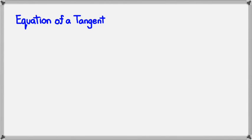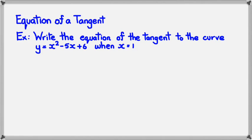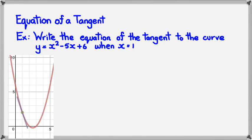So how do we find the equation of a tangent? I guess the best way to do it is through an example. Here's the question: Write the equation of the tangent to the curve y = x² - 5x + 6 when x = 1. As always, I'd recommend to you guys to just draw a quick diagram just to see what you're trying to work out. It always helps in calculus.